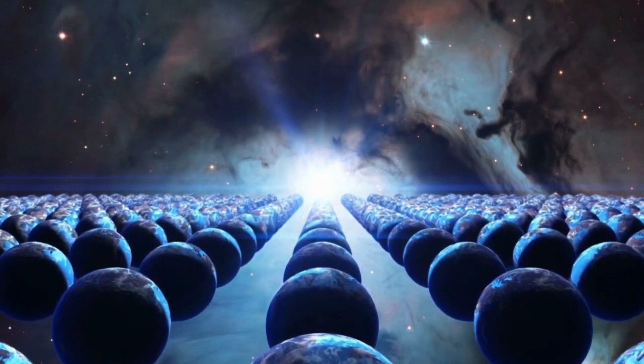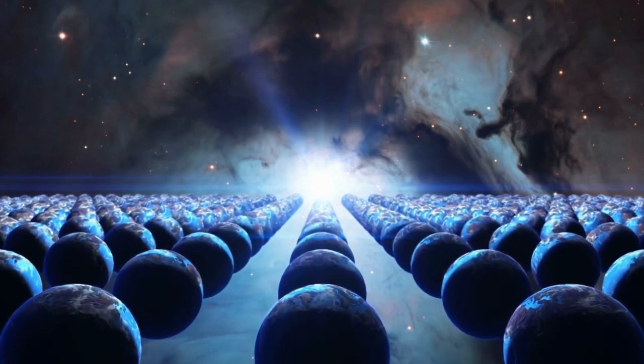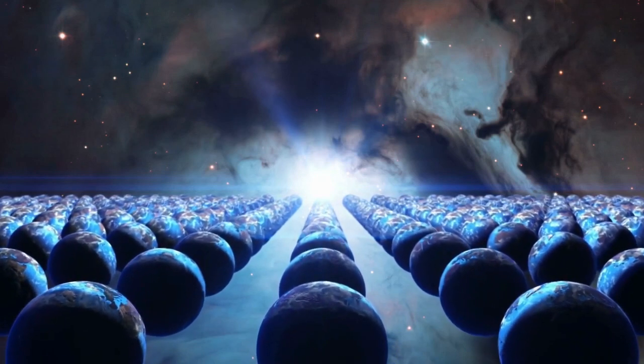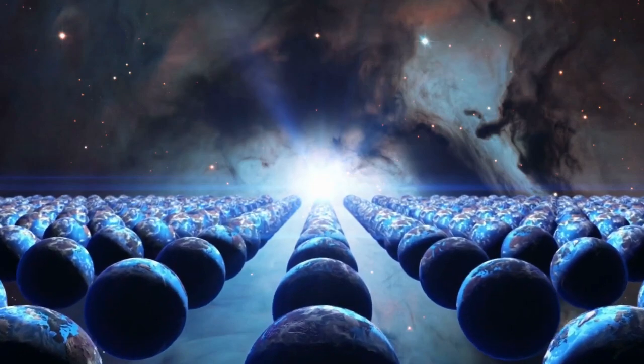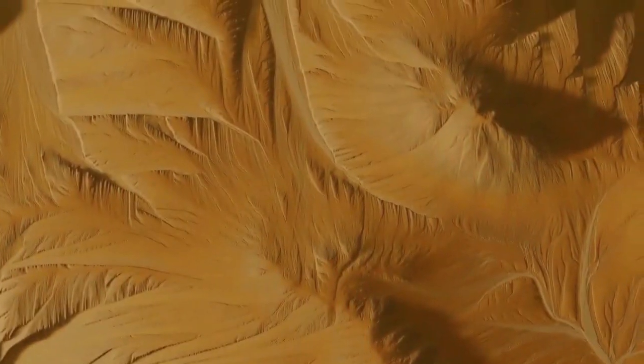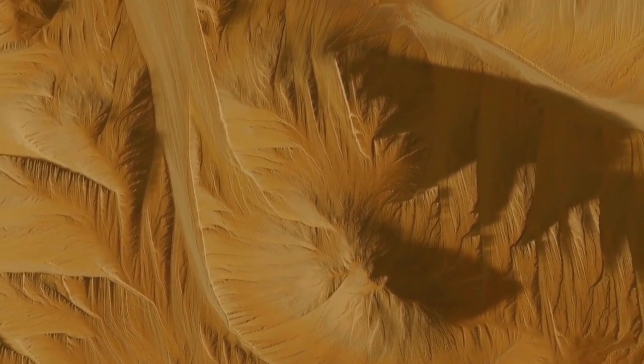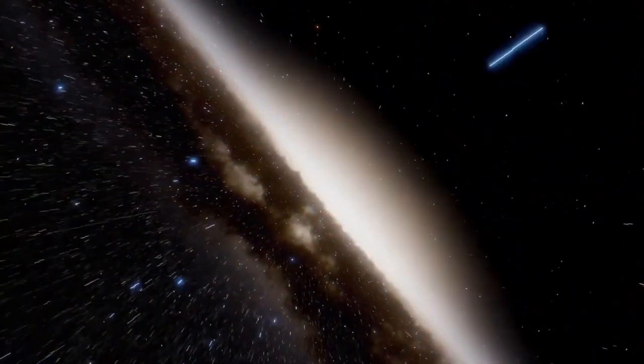The James Webb Telescope detected some unusual atmospheric compositions on this exoplanet. Spectroscopic analysis revealed the presence of specific gases that on Earth are often associated with biological activity. Does this mean there's life out there? It's too soon to say, but these signs are certainly tantalizing.